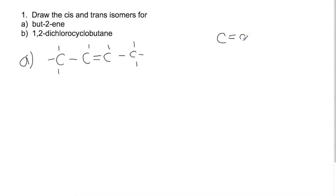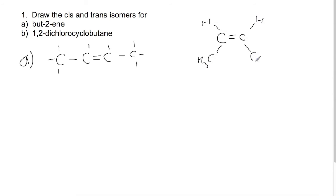Start with the C double bond C and put in the bonds around the carbons, remembering they have a 120-degree angle. For the cis isomer, the two CH₃ groups on either end will be on the same side of the molecule, and for the trans isomer they will be on opposite sides.